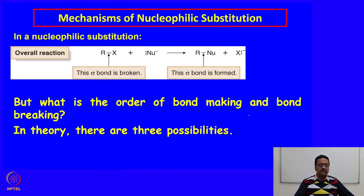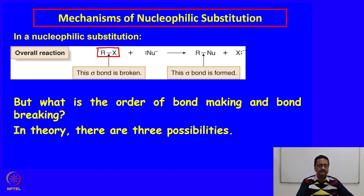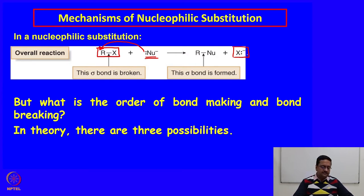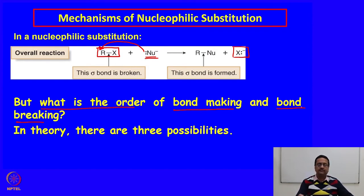The overall reaction we are trying to understand in nucleophilic substitution is that the sigma bond between R and X is broken. A nucleophile donates its electrons to the alkyl halide carbon and forms a new sigma bond, while the leaving group is expelled. The question is: what is the order of this bond-making and bond-breaking process? Theoretically, there are three possibilities.